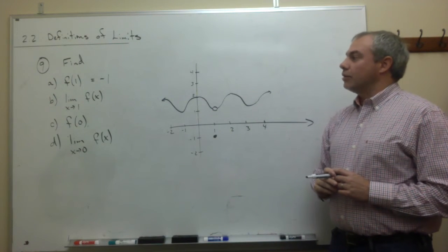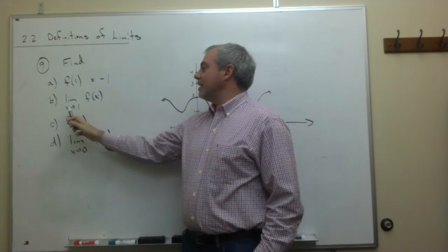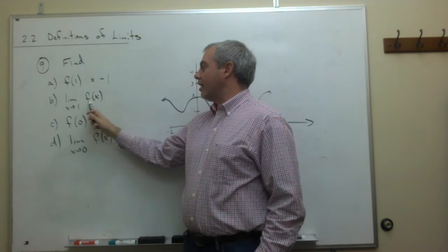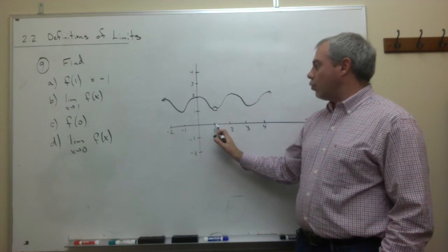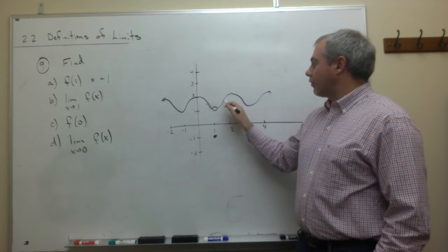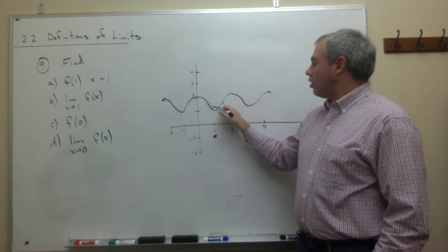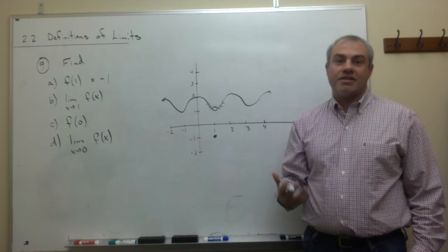All right, let's take a look at part B. Part B is asking us what's the limit as x goes to 1 of f of x. So as we come at the x value 1 from the left and from the right, are we getting close to something? If the answer is yes, this thing has a limit. If the answer is no, it does not.